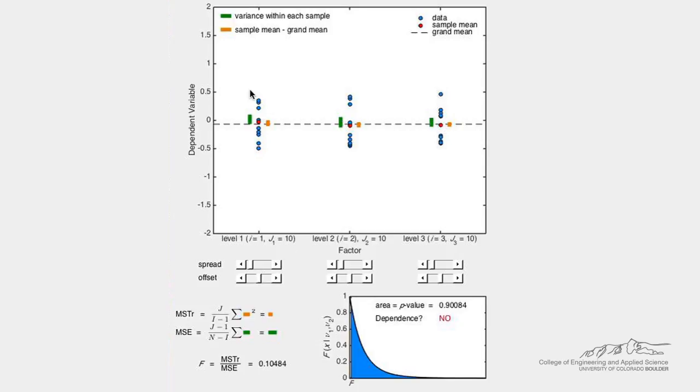Let's calculate the difference between each sample mean and the grand mean, shown visually with the orange bars. A one-way ANOVA is a special type of hypothesis test that tells us if one of these experiments differs significantly from the others.